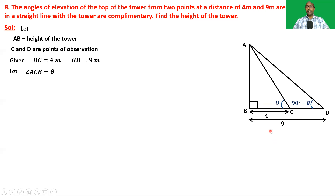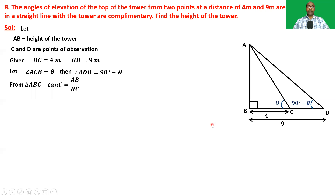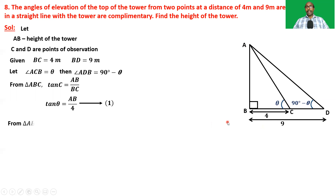Then angle ADB is 90 minus theta because they are complementary. Now from triangle ABC we can write tan C equals AB by BC, that is tan theta equals AB by four. Take it as equation one. Now take the second triangle, triangle ABD.